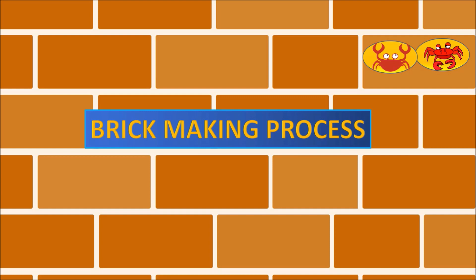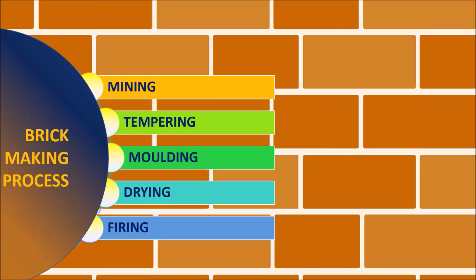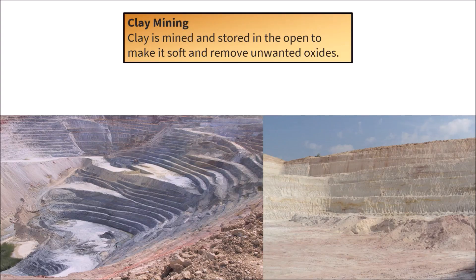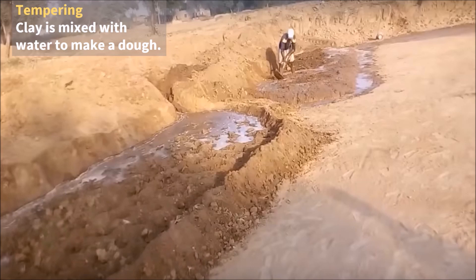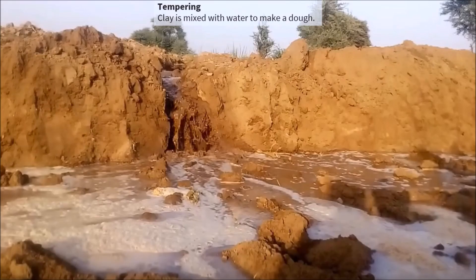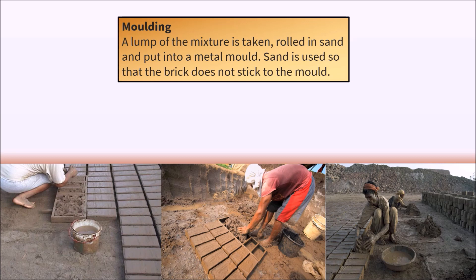Brick making process. The main steps of brick making are: 1. Mining — clay is mined and stored in the open to make it soft and remove unwanted oxides. 2. Tempering — clay is mixed with water to make a dough. 3. Molding — a lump of mixture is taken, rolled in sand, and put into a metal mold. Sand is used so that the brick does not stick to the mold.